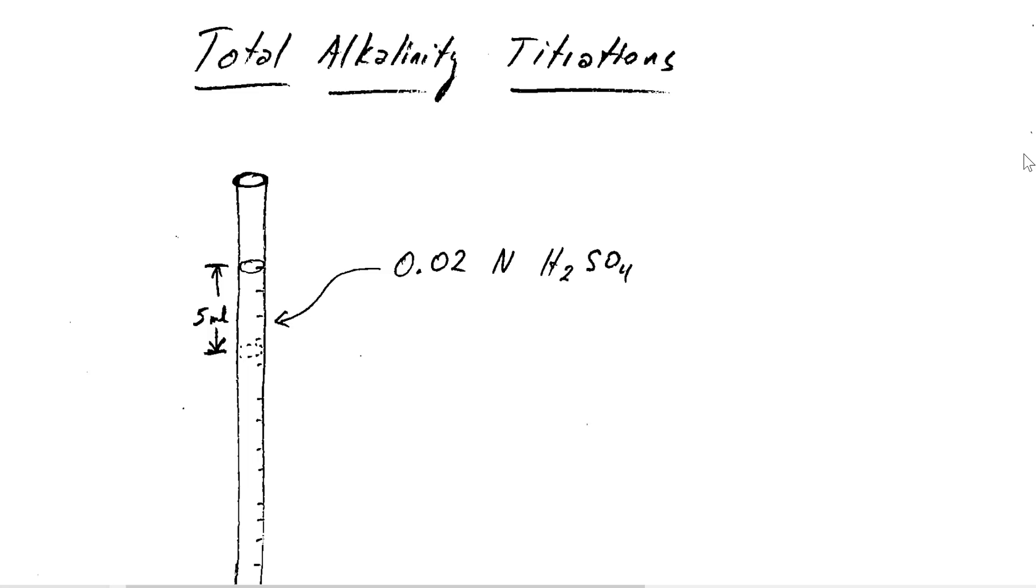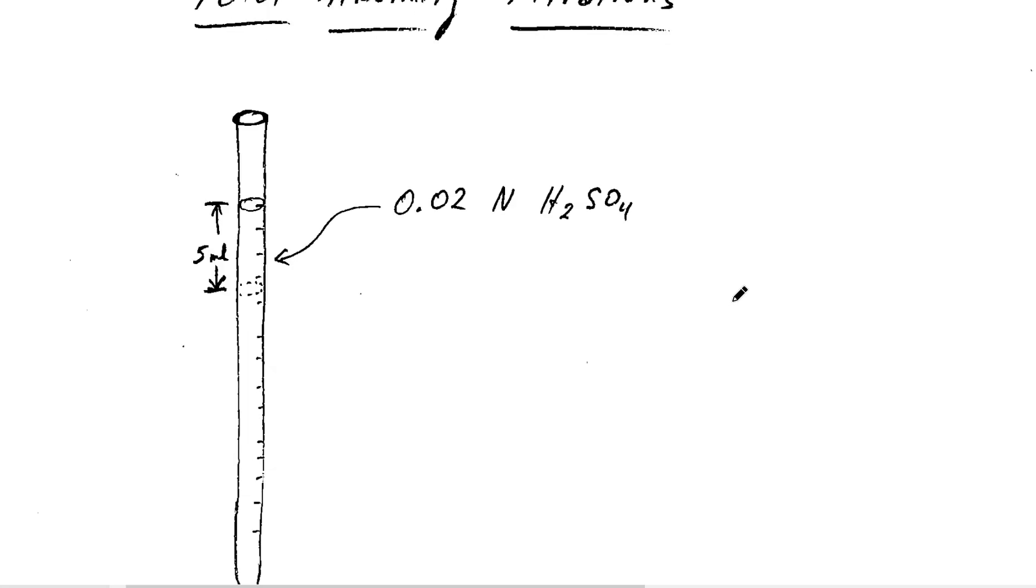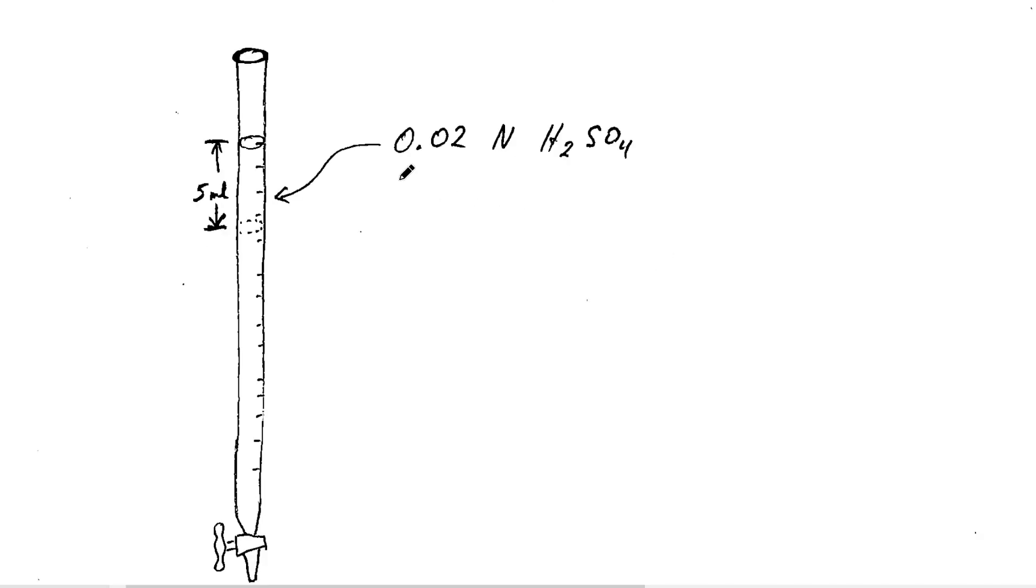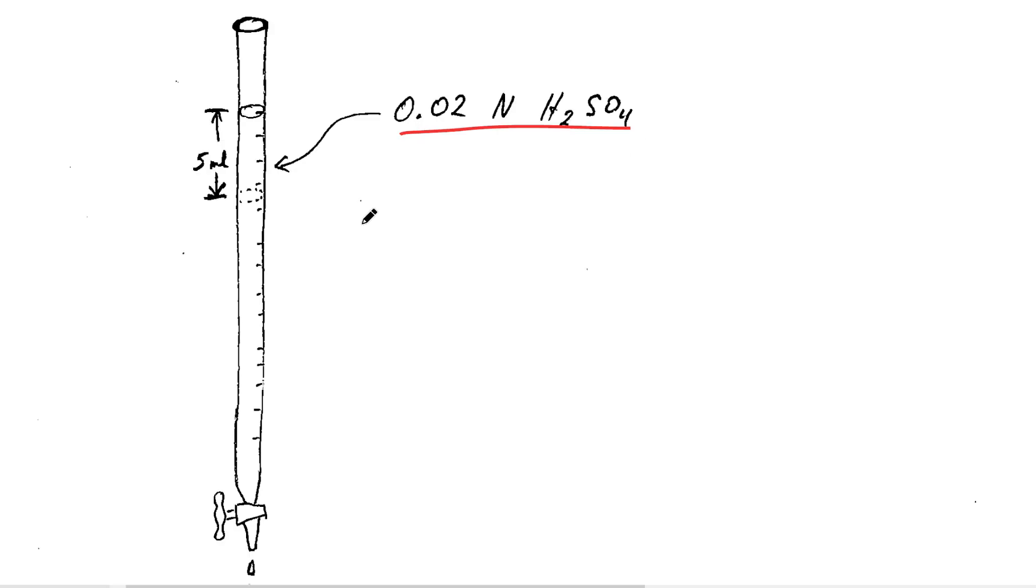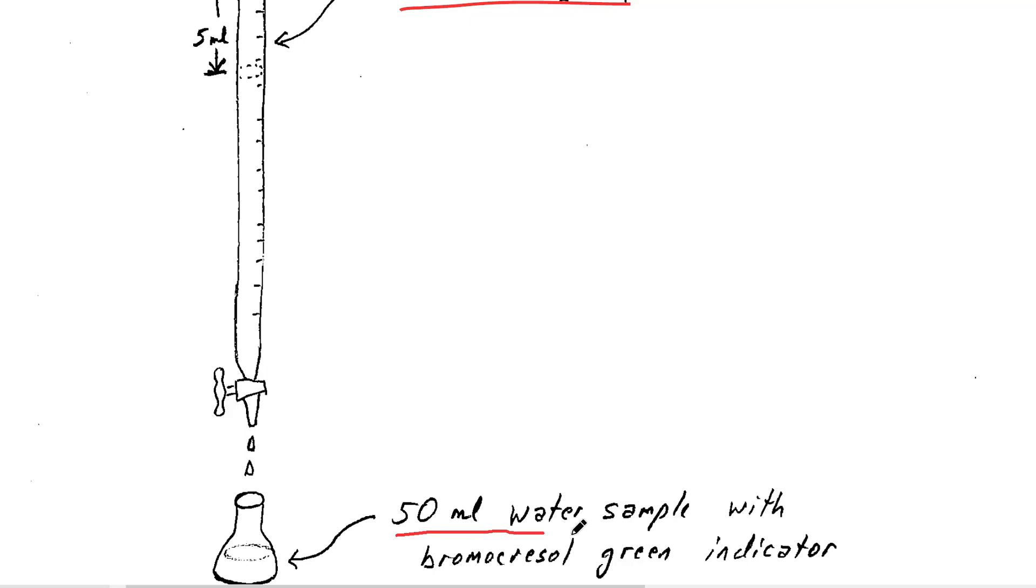So you want to measure alkalinity. You can do that using a burette and a titration method. Fill the burette with 0.02 normal sulfuric acid and drop it dropwise into a 50 milliliter water sample that has bromocresol green indicator in it.